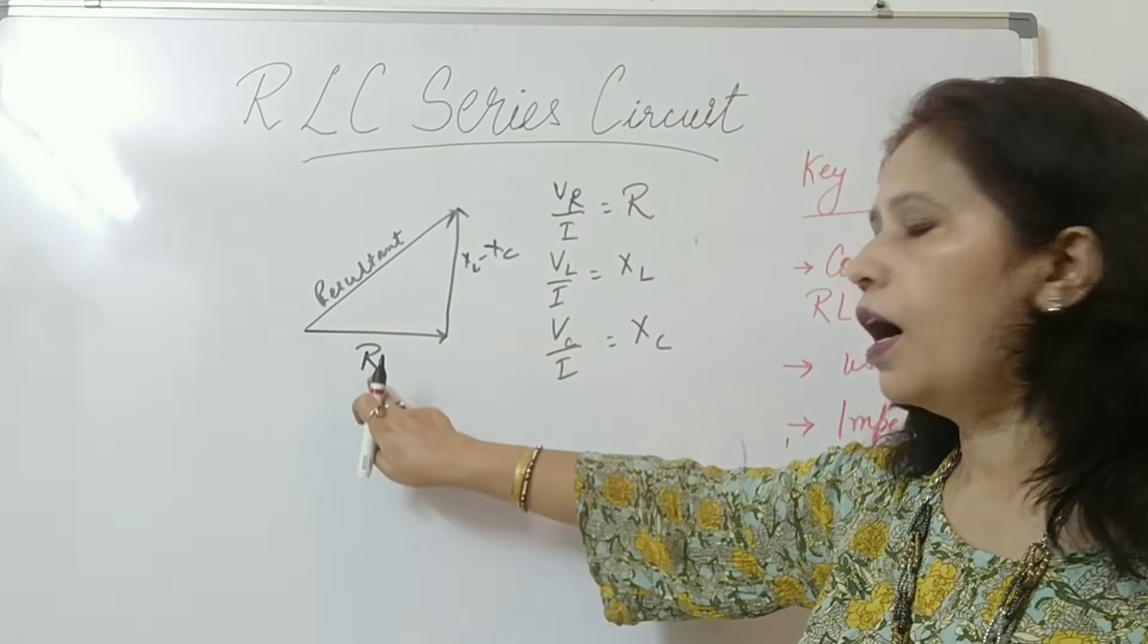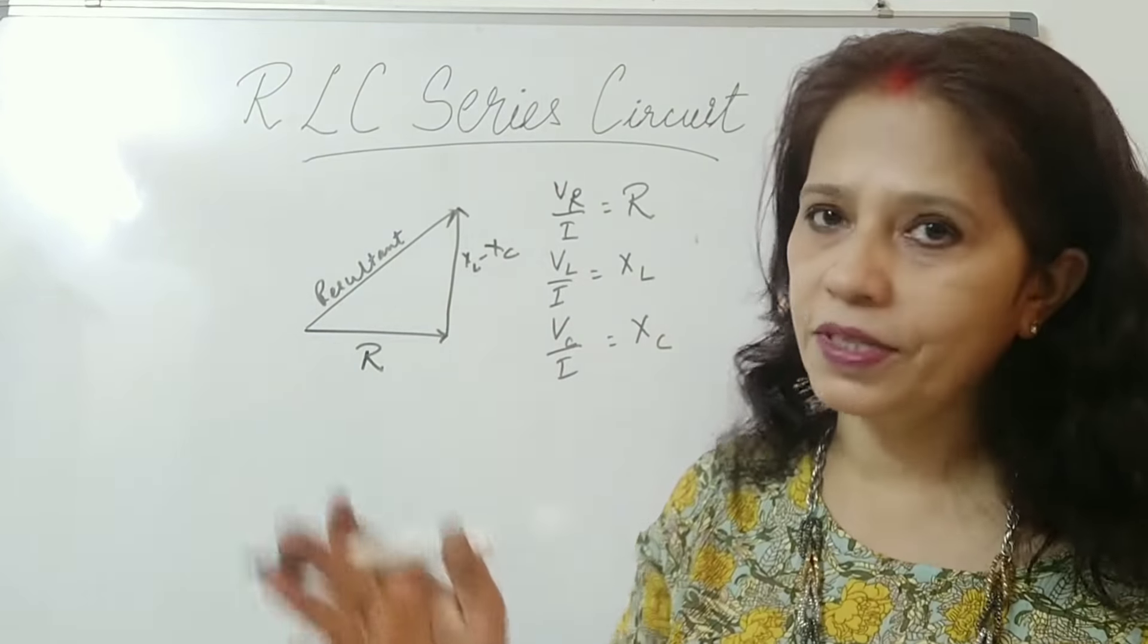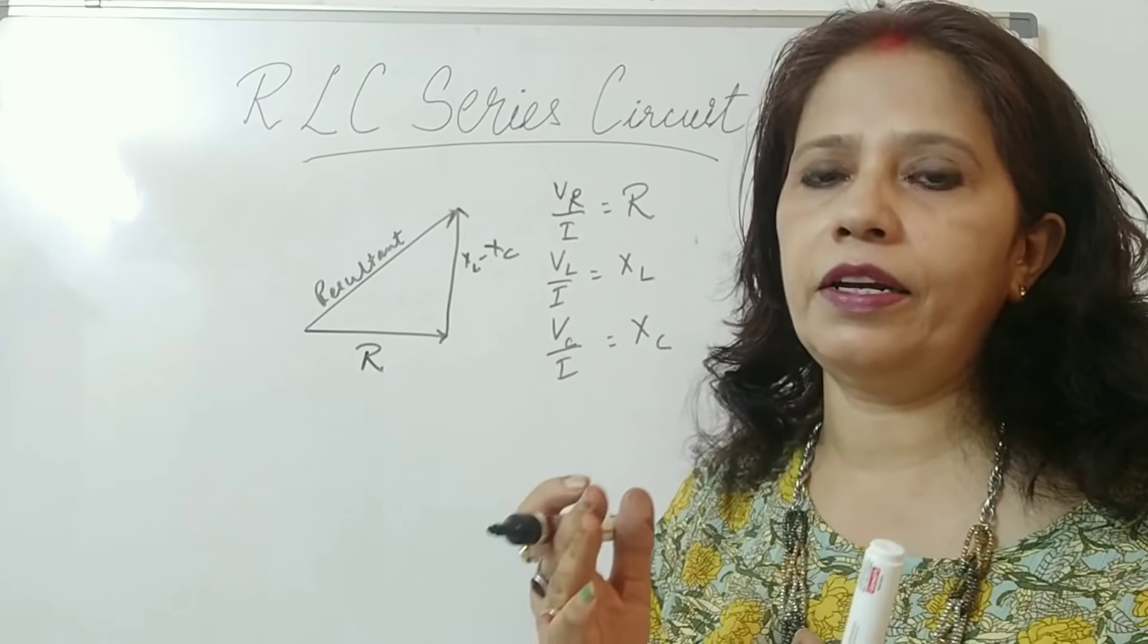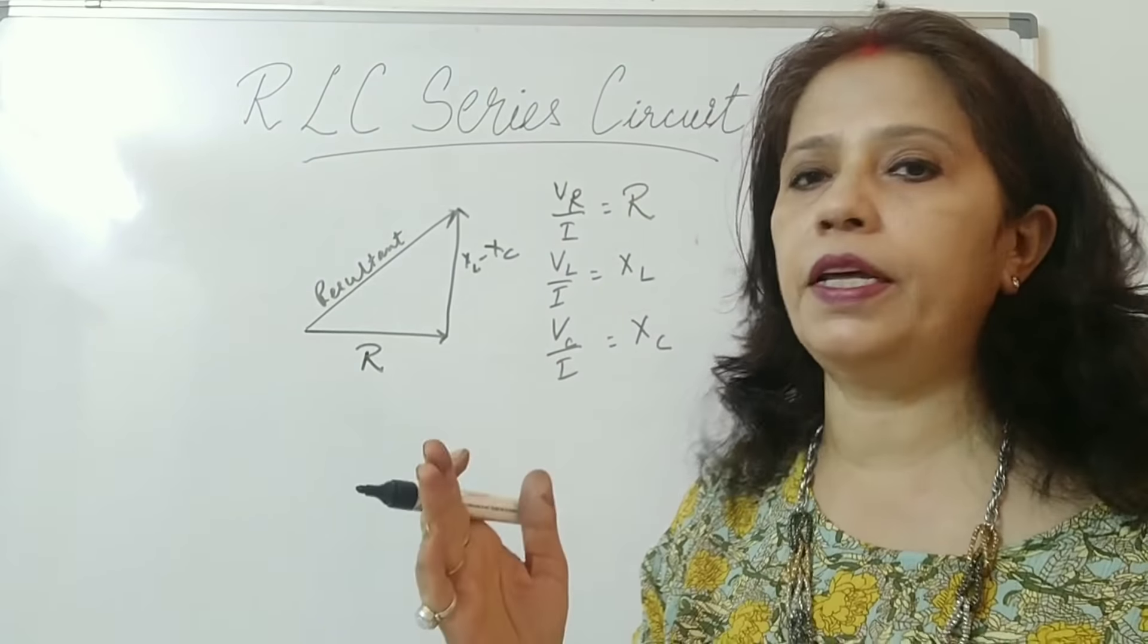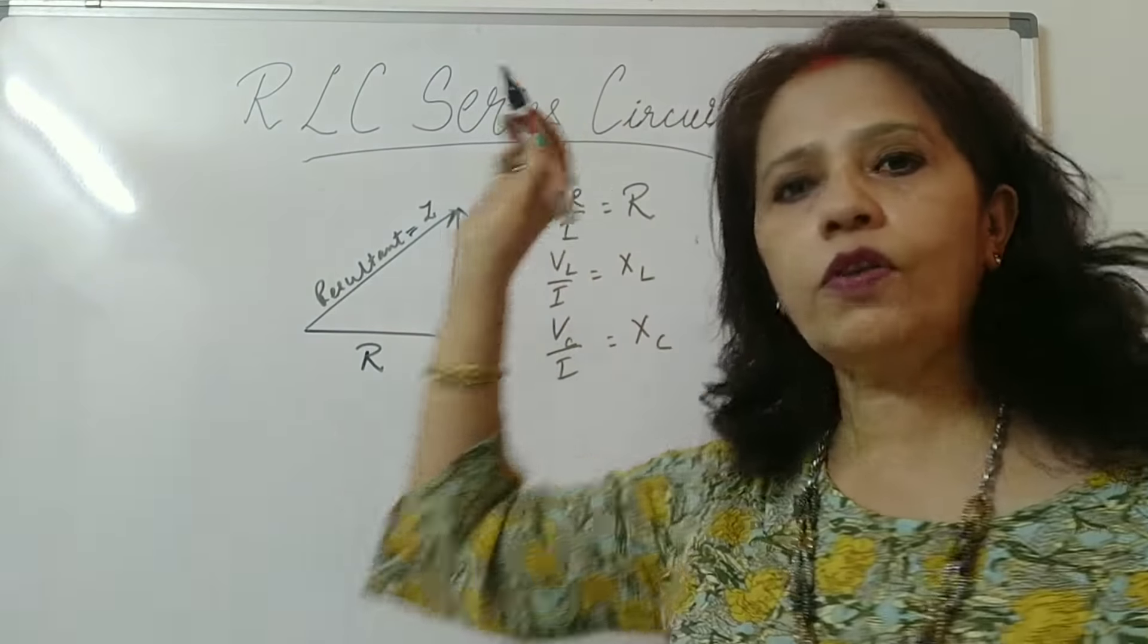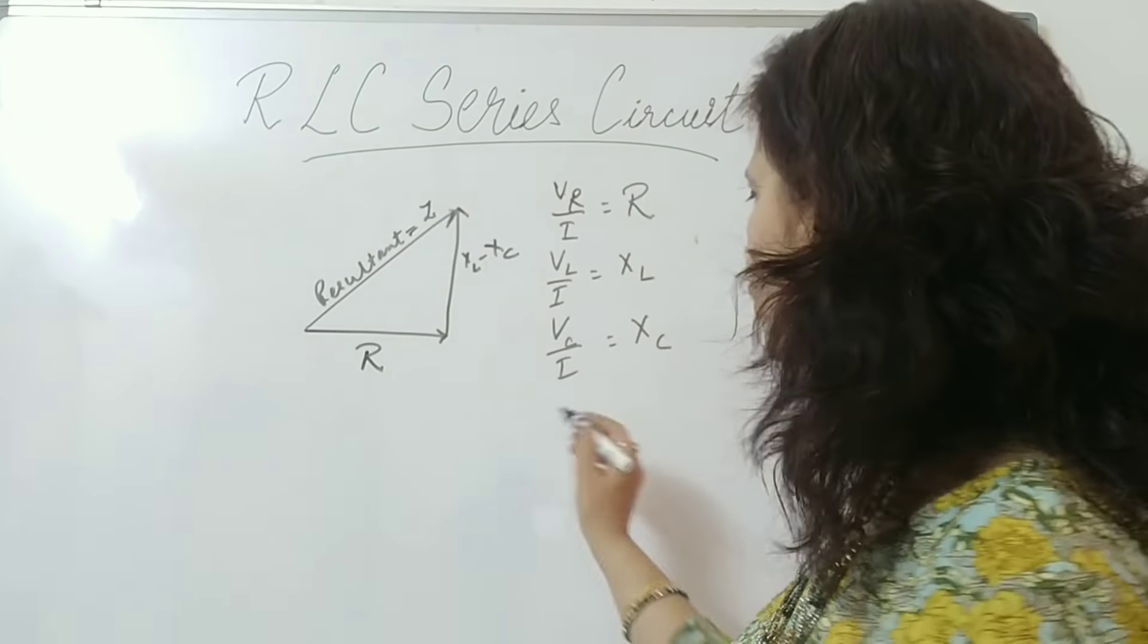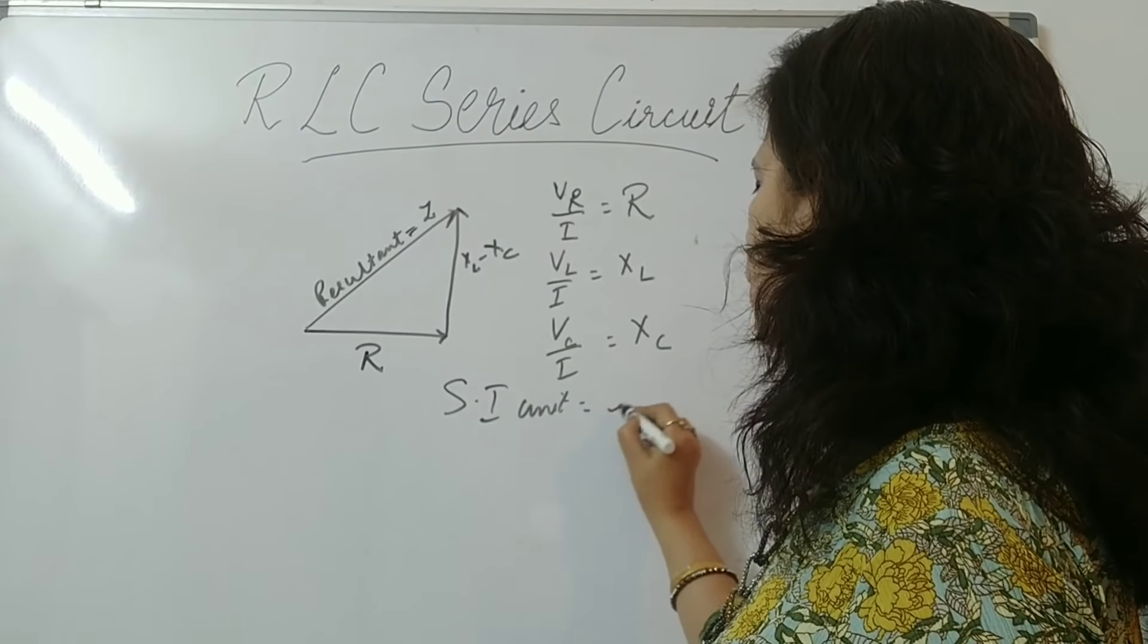Now you see here R is also opposing current. XL minus XC are also opposing the current. So this resultant will also oppose the current. That is it impedes the current or decreases the current. And this is called impedance which is denoted by the letter Z. What will be the SI unit of its children? Of course it is opposing the current. So its SI unit will be also Ohm.